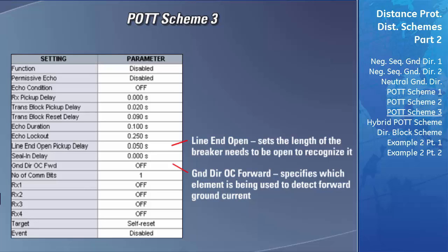If you do not want tripping and keying to occur upon the detection of forward ground current in the POTT scheme, leave this setting to off. Just like the other schemes described, the POTT scheme can detect if the fault is occurring on a single phase or on multi-phases. These communication bit settings need to be configured to let the D60 know what key sequence scheme is used. The setting of these fields was covered in the earlier sections.